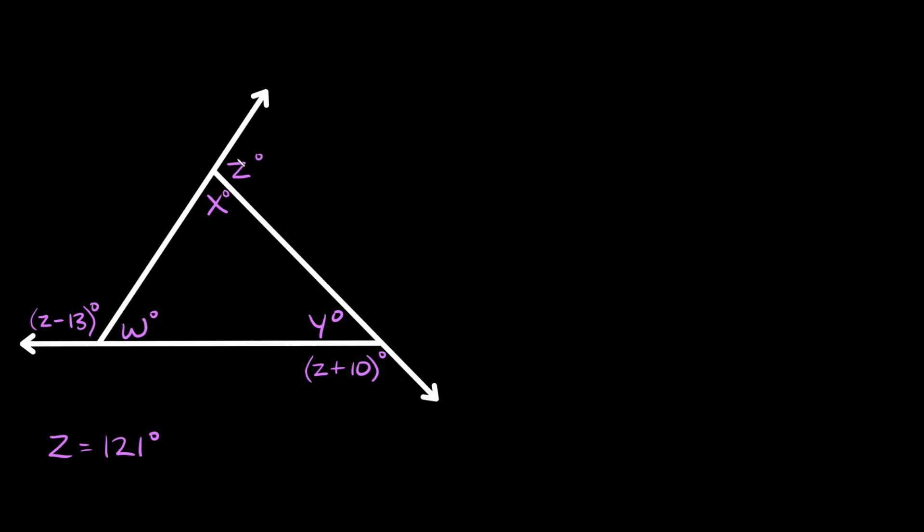So z, that means this angle over here since it's just z, this is equal to 121 degrees. This one is z plus 10, so 121 plus 10 is equal to 131 degrees. And then this one is 121 minus 13, and that's equal to 108 degrees.